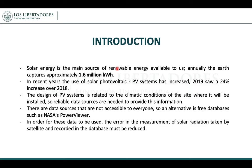First, we present some data that is important for the development of this work. Solar energy is the main source of renewable energy on Earth, capturing roughly 1.6 million kilowatts per hour. In recent years, the use of solar photovoltaic systems has increased — in 2019 showing a 24% increase over 2018. The design of solar photovoltaic systems is related to the climate conditions of the site where it will be installed.